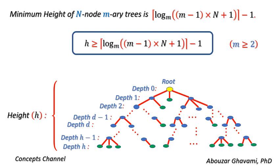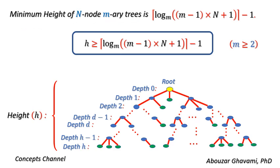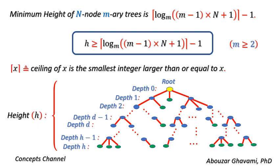We show that the minimum height of an n-node m-ary tree, where m is greater than or equal to 2, is ceiling of log base m of (m minus 1) times n plus 1, minus 1. Here, ceiling of x is the smallest integer larger than or equal to x.